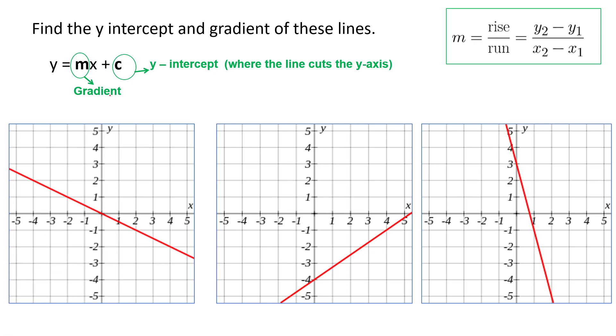So it says find the y intercept and gradient of these lines. The y intercept here is when it crosses the y axis, so that y intercept is zero, so c equals zero here, the y intercept.